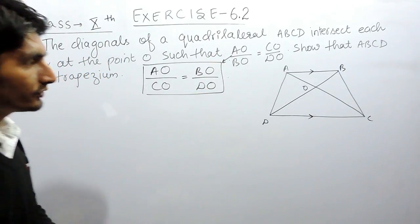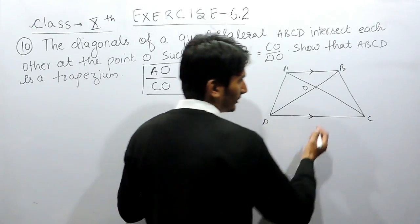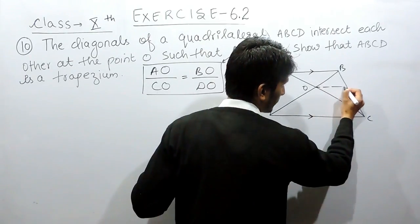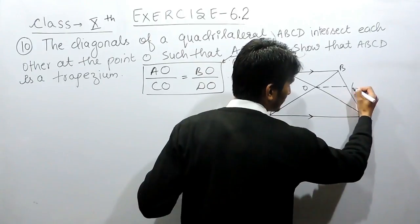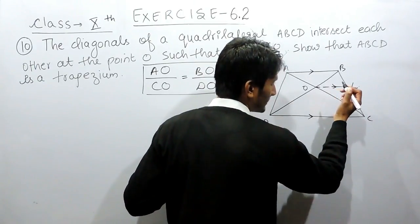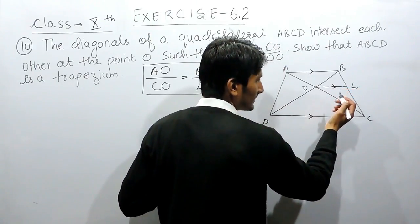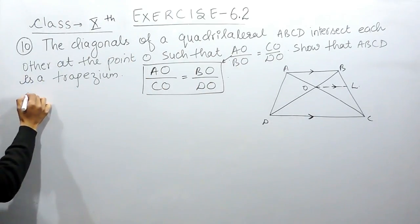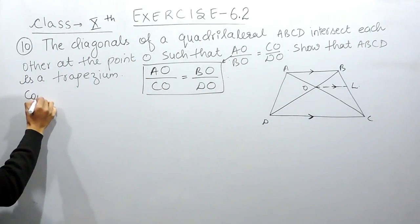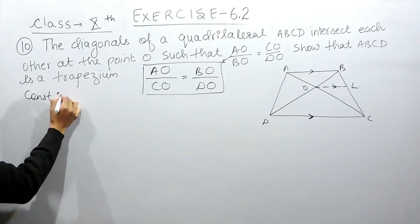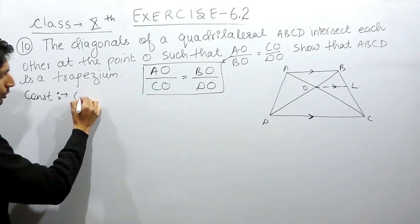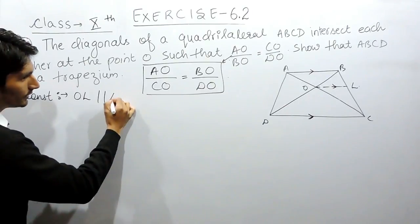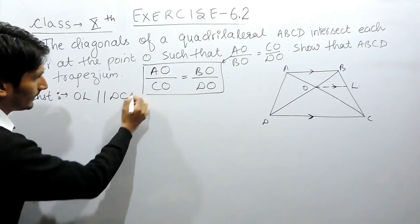Now, to prove these two lines as parallel, we again have to construct a parallel line. Consider OL, and consider that this line is parallel to DC. So we have to do a construction here. We are drawing OL parallel to DC.